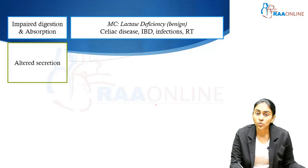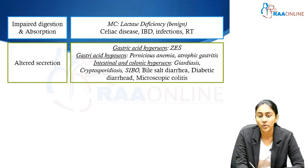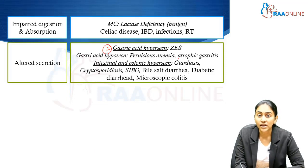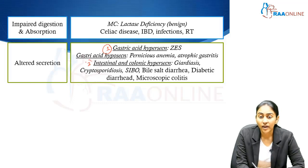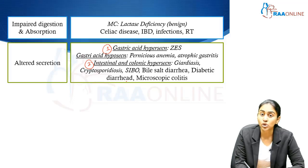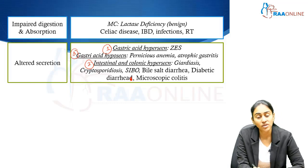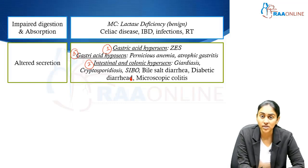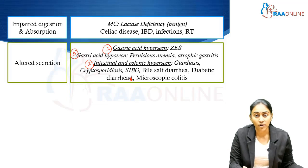Let us look at disorders where the root problem is in altered secretion. Certain disorders are characterized by hypersecretion. Hypersecretion in the stomach is characteristic of Zollinger-Ellison syndrome, where there is hypersecretion of gastric acid. Intestinal and colonic hypersecretion can be seen in infections like Giardia and Cryptosporidium, and also in non-infectious causes like diabetic diarrhea, small intestinal bacterial overgrowth, and bile salt diarrhea. Certain conditions involve hyposecretion — for instance, in pernicious anemia and atrophic gastritis, there is hyposecretion of gastric acid.